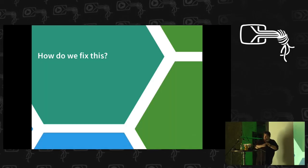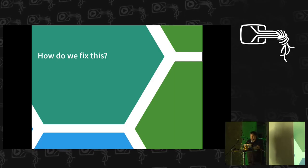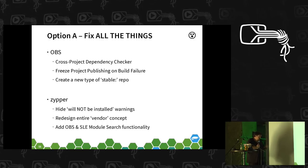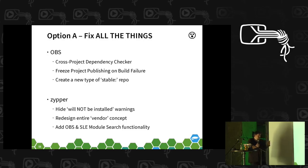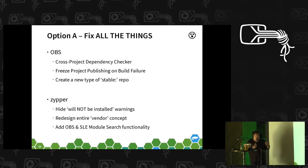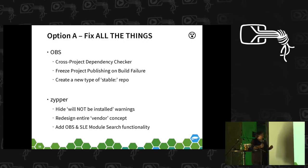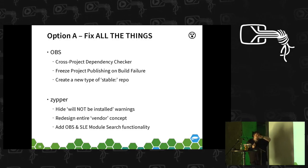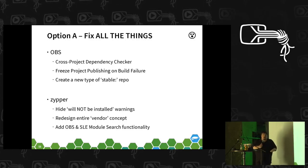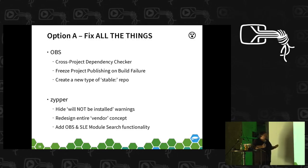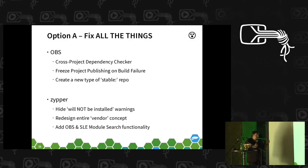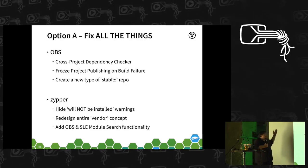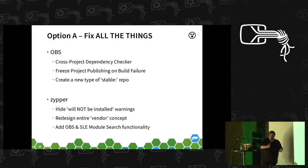So how do we fix all of this? There are really two options. One: fix everything — and there's a long list. Starting with OBS, maybe we need a cross-project dependency checker so we can see if this develop repo and that develop repo work together. We've had issues with projects publishing broken packages or build failures while the repo keeps being published inconsistently — so maybe we need some way of freezing the publishing of a project when there's a build failure.